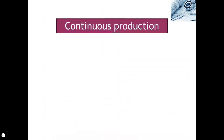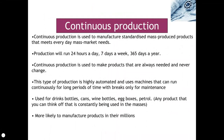Our first scale of production is continuous production. Continuous production is used to manufacture standardised, mass-produced products that meet everyday mass market needs. Good examples include soft drink bottles, soft drink cans, wine bottles, egg boxes, electricity, petrol — anything constantly used by the masses. This production runs 24 hours a day, 7 days a week, 365 days a year. It's used for products that never change and have been the same for a long time. It's highly automated, using CNC machinery that can continuously run for long periods with breaks only for maintenance.